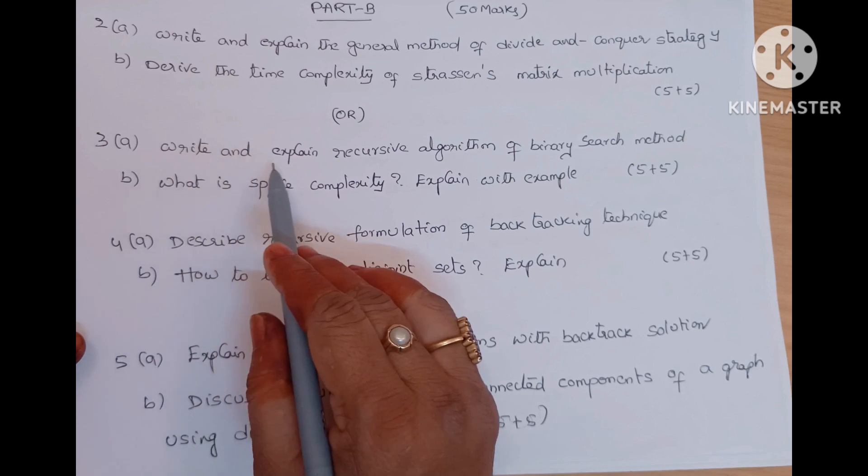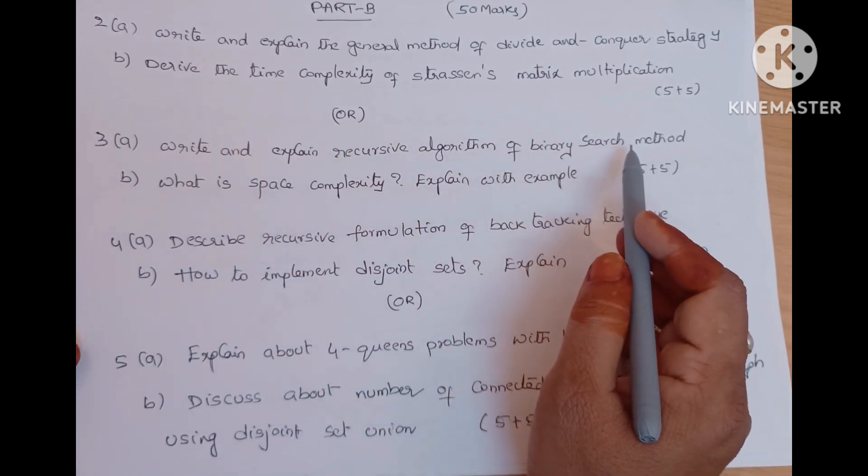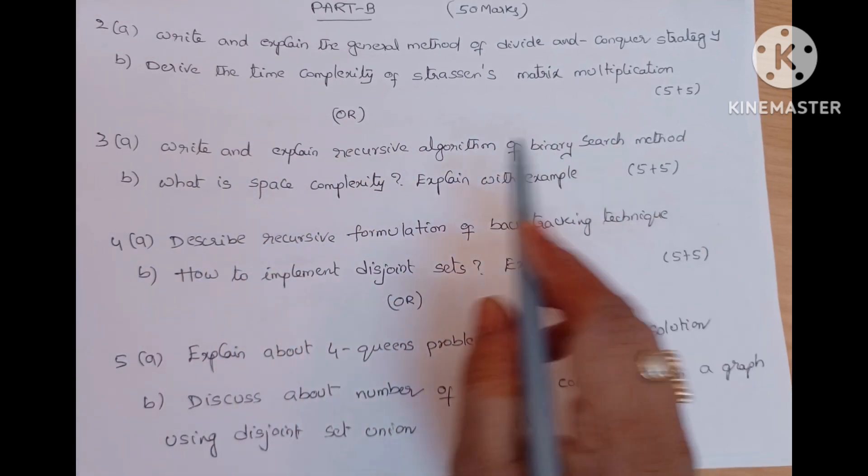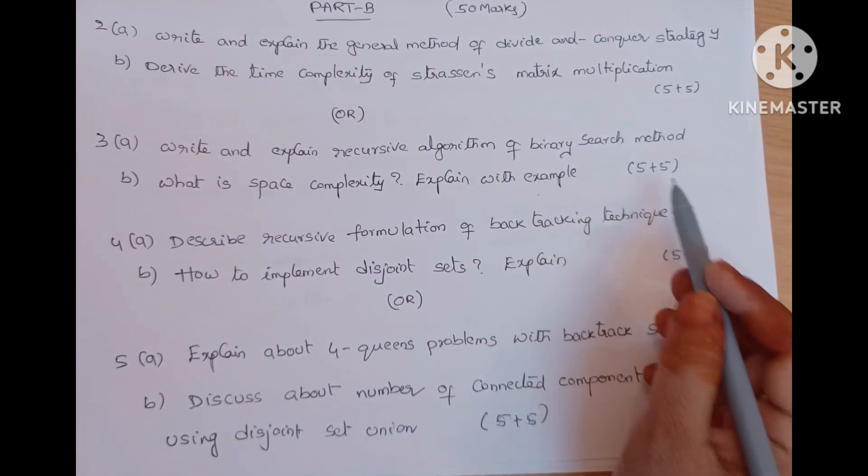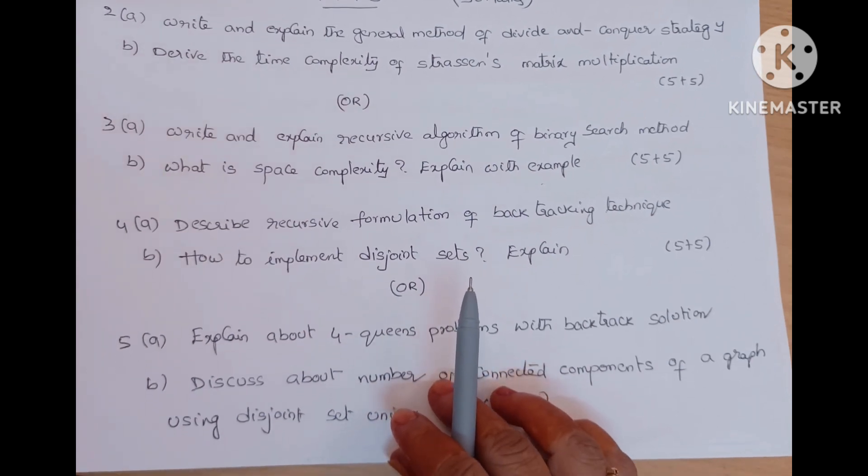Three A, write and explain recursive algorithm of binary search method, very important question. Or what is space complexity? Explain with an example. Five plus five, ten marks. Those are coming from unit one.